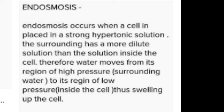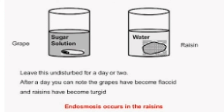Endosmosis — 'endo' means inside — is the inward diffusion of water when the surrounding solution is less concentrated. This brings about the swelling of the cell. When the concentration of the outer solution is very less than the concentration inside the cell, the movement of the solvent takes place from lower to higher concentration. So if the outer surrounding has lower concentration and the inside of the cell has higher concentration, liquid will move inward through the membrane, causing the cell to swell.